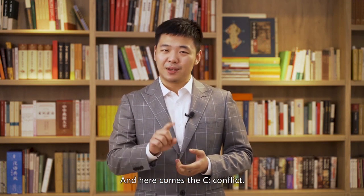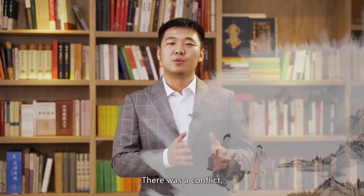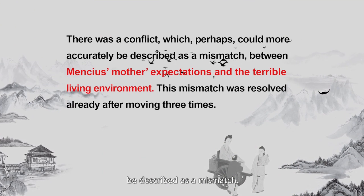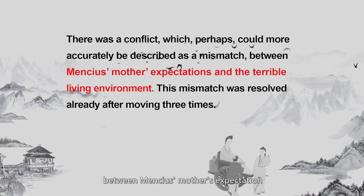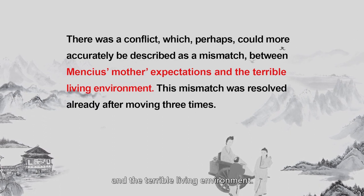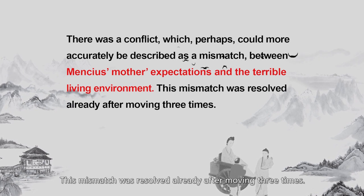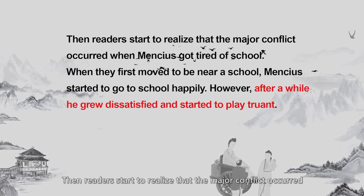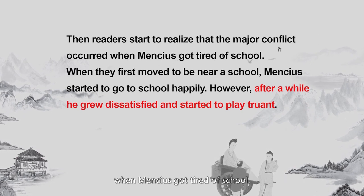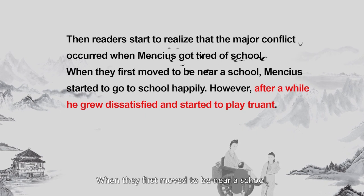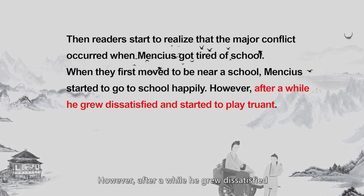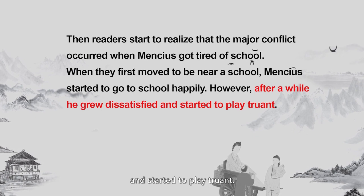In Mencius's mother's view, none of those occupations were worthy pursuits. And here comes the C — Conflict. There was a conflict, which perhaps could more accurately be described as a mismatch, between Mencius's mother's expectations and the terrible living environment. This mismatch was resolved after moving three times. Then readers start to realize that the major conflict occurred when Mencius got tired of school. When they first moved to be near a school, Mencius started to go to school happily.